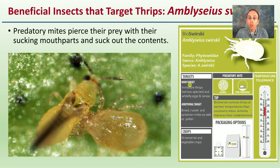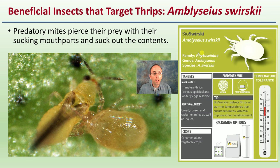The first beneficial insect discussed is Amblyseius swirskii, a predatory mite that pierces prey with its sucking mouthparts and sucks out the contents. There is a temperature tolerance range for this mite, so you don't want to go above or below that range in order to allow for maximum effectiveness.